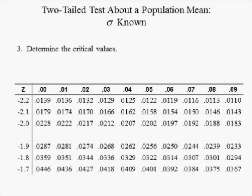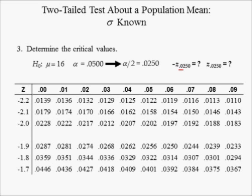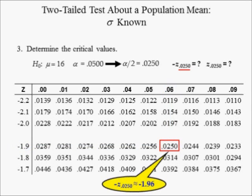In step three, we determine the critical values. Since this is a two-tailed test with a significance level of 0.0500, alpha has to be divided by two, which equals 0.0250. Negative z subscript 0.0250 is found by locating 0.0250 in the standard normal probability distribution table, which is in row negative 1.9 in column 06. Thus, negative z subscript 0.0250 is equal to negative 1.96. And by symmetry, z subscript 0.0250 is equal to 1.96.